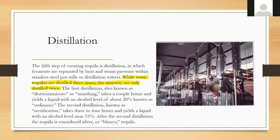Distillation then follows — here ferments are separated by heat and steam pressure within stainless steel pots or distillation towers. While some tequila is distilled three times, the majority are distilled twice. The first distillation, known as 'desmodado' or 'smashing,' takes a couple of hours and yields a liquid with about 20% alcohol called ordinario. The second is called rectification, takes three or four hours, and yields a much higher alcohol content towards 55%. After that second distillation, you can consider it blanco tequila.